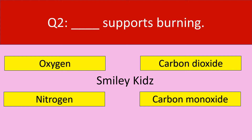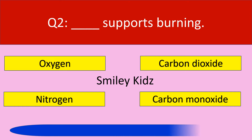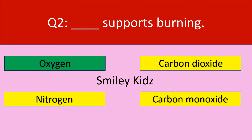Moving to question number 2. Dash supports burning. Your options are oxygen, carbon dioxide, nitrogen, carbon monoxide. The correct answer is oxygen. Oxygen supports burning.